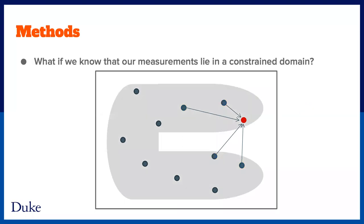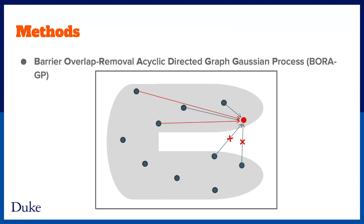But what if our domain has some shape like this gray horseshoe? This illustration quite irritates us because two of the neighbors are located in the other arm than the one the red dot is located in. We believe these two points shouldn't be too influential only because their Euclidean distance is short. Intuitively, we would want to remove the directed edges coming from the other arm and look for two other neighbors in the same arm.